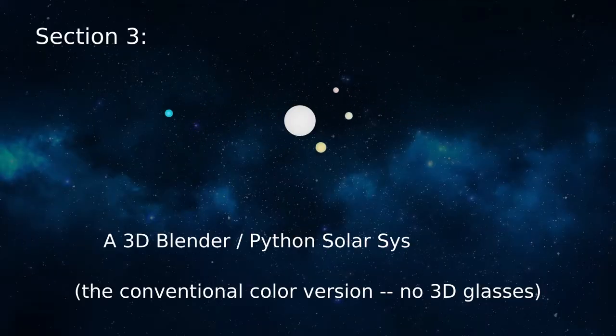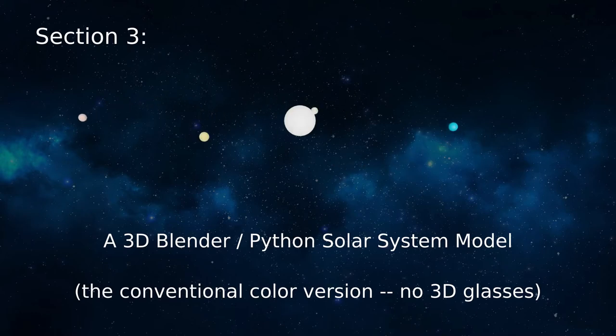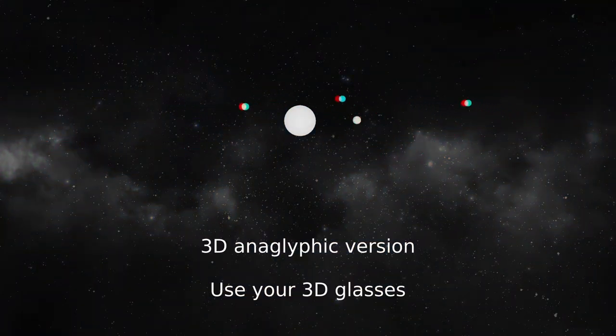I've been working on a solar system model using the Blender graphics program and the Python computer language. In this model, I set up a planetary flyby gravity assist in which a spacecraft gets a velocity boost by passing close to Jupiter.